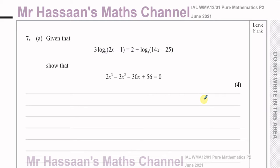This question is about logarithms — part A anyway — and we have to use the laws of logarithms to show that this expression, this equation in terms of logs, becomes this equation which doesn't have any logs in it. So we have to know the laws of logarithms and apply them to this situation.